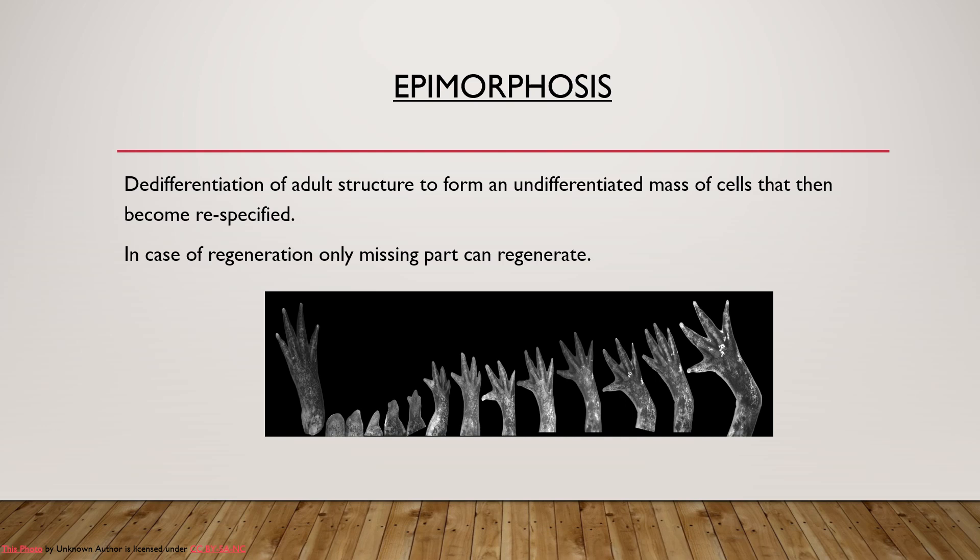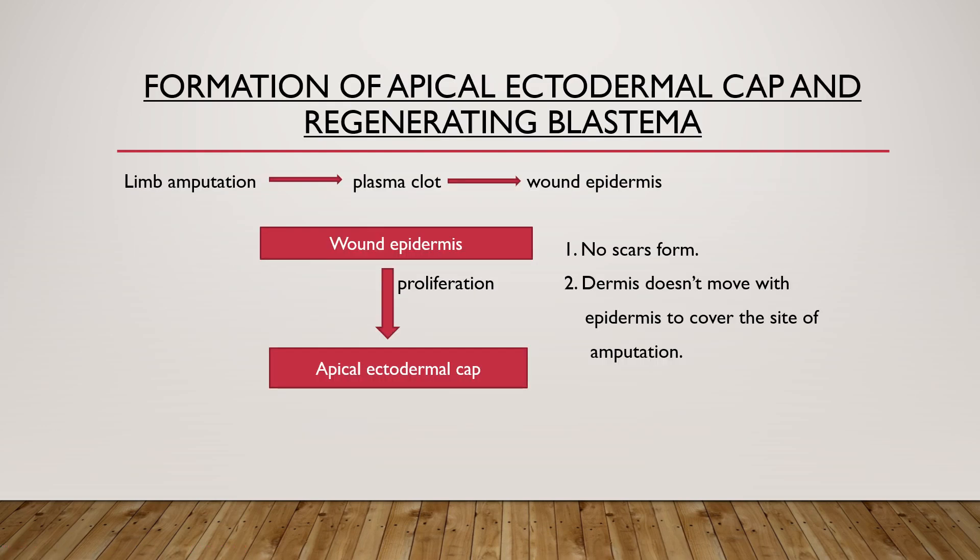In regeneration, only the missing part can regenerate, and this only occurs if the missing tissues are present at the place where the organ was lost — otherwise no regeneration takes place. Next is the formation of the apical ectodermal cap and regenerating blastema. Whenever amputation is made, a blastema is formed over the amputation site.